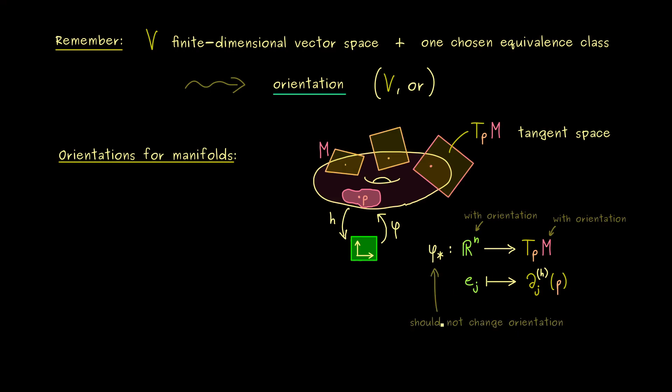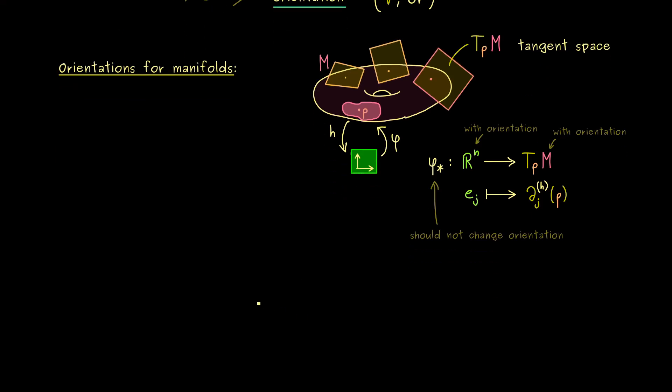Hence, this essentially means that our coordinate basis here should be positively orientated. In other words, the coordinate basis lies in the equivalence class we have chosen as the orientation for TPM. And to make this point clear, let's put everything into a definition.